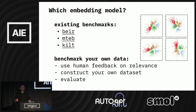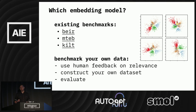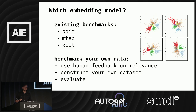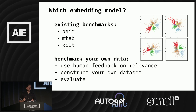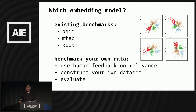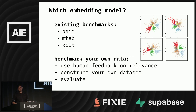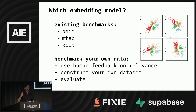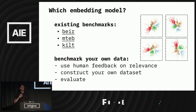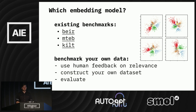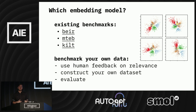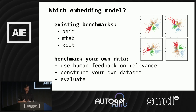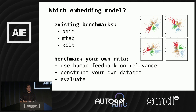One interesting part about embedding models — and this is something that's been well known in the research community for a while but has been empirically tested recently — is that embedding models with the same training objective and roughly the same data tend to learn very similar representations up to an affine linear transform. This suggests that it's possible to project one model's embedding space into another model's embedding space by using a simple linear transform. So the choice of which embedding model you actually want to use might not end up being so important if you're able to figure out that transform from your own dataset.